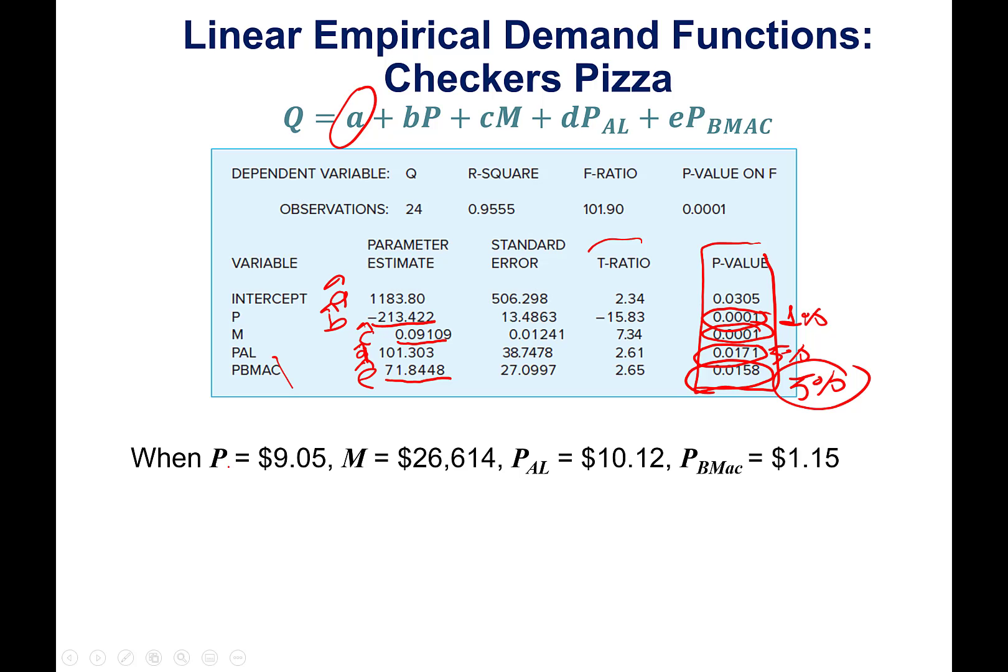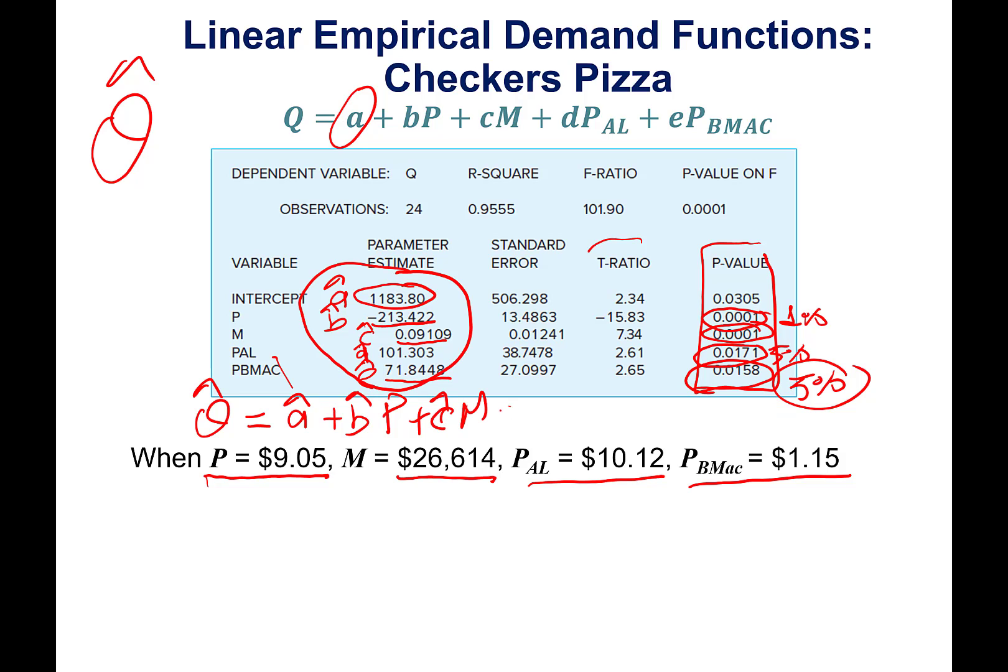We are given the numbers. Right now your pizza is $9.05, median income of the people in the area is $26,614, price of Al's pizza is $10.12, and price of Big Mac is $1.15. Why do we need this information? Because I want to find Q-hat. How do I find Q-hat, the estimated quantity sold? We're going to plug in A-hat plus B-hat times P plus C-hat times M—all these estimated coefficients—plus D-hat times price of Al's pizza plus E-hat times price of Big Mac.